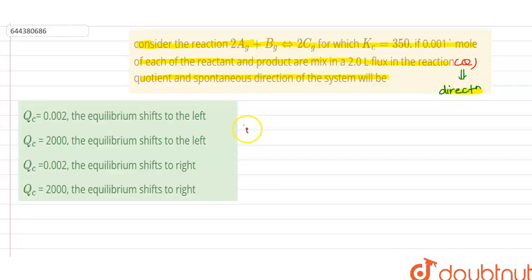We have three criteria for this. Suppose Q is greater than K. Then in this case the reaction will favor the reactant, and the equilibrium will tend towards the left direction, or you can say it will tend towards the backward direction.